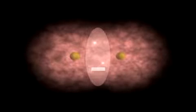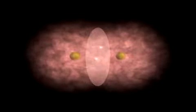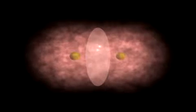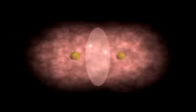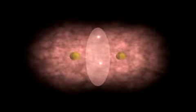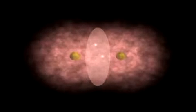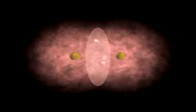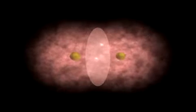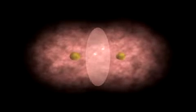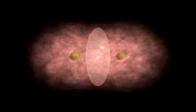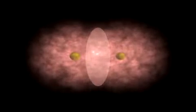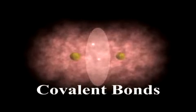The two atoms stay together not because they are attracted to each other, but because the positively charged nuclei of each hydrogen atom is attracted to the area of negative charge created between them by the shared electrons. The bonds formed as a result of these attractions are called covalent bonds.